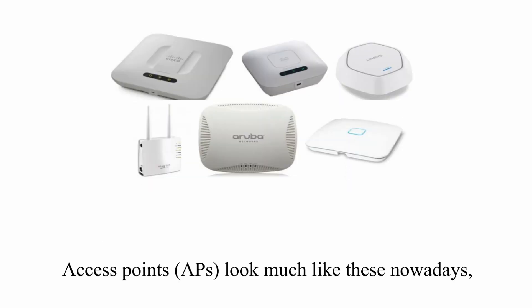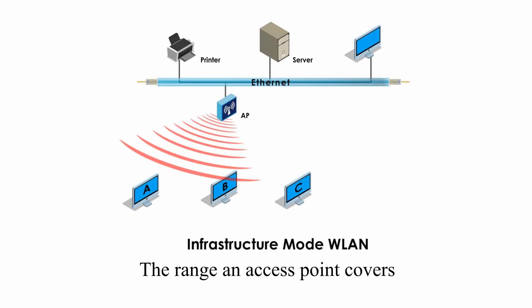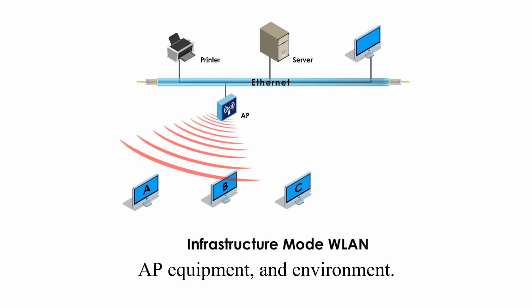Access points look much like these nowadays and you could see them mounted to the ceiling of a hallway or room. The range an access point covers is about 100 to 200 feet, and 300 feet is the maximum, depending on 802.11 standards, AP equipment, and environment.